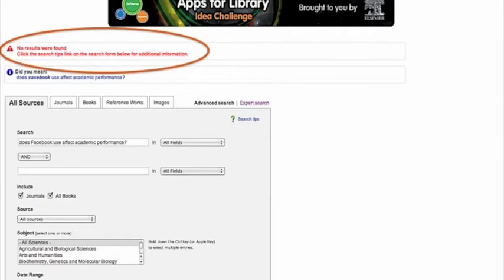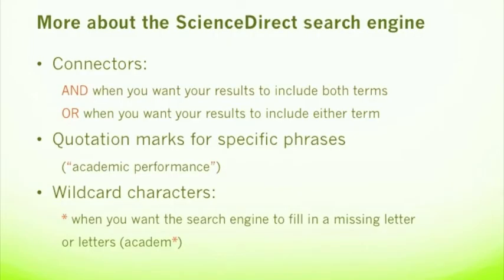ScienceDirect has its own customized version of a Boolean search. Connectors are terms you use to link your keywords. Type AND between keywords when you want your results to include all the keywords. Type OR between keywords when you want your results to include any one of the keywords. If you want to search for a specific phrase, put it in quotation marks — this tells the search engine to look for those words in that specific order. Use wildcard characters if you want the search engine to fill in missing letters: ACADEM* will retrieve academic, academy, academics, academia, and so forth.